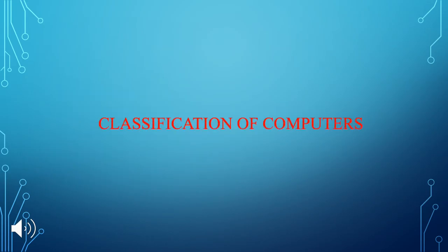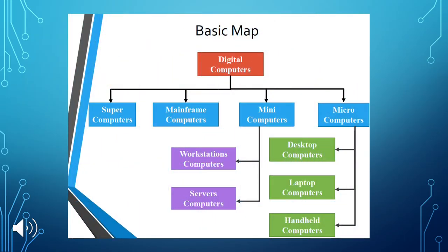Now I want to talk about the classification of computers. As you can see in the basic map, digital computers are divided into four main types: supercomputers, mainframe computers, minicomputers, and microcomputers. Microcomputers are divided into three types: desktop computers, laptops, and handheld. Minicomputers include workstation computers and server computers.